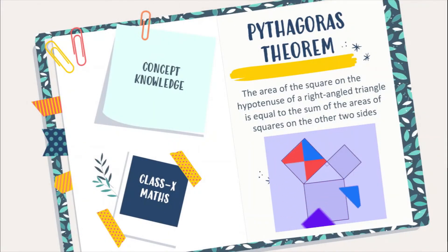So, let us quickly recall the statement of Pythagoras theorem. Pythagoras theorem states that the area of the square on the hypotenuse of a right angle triangle is equal to the sum of the areas of the squares on the other two sides. As you can see here in the GIF.